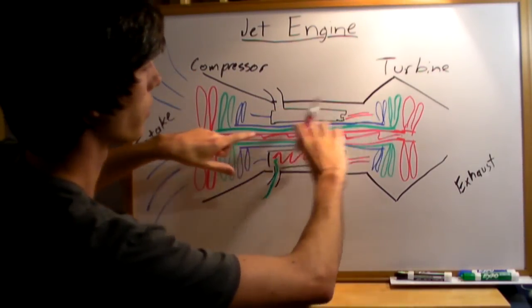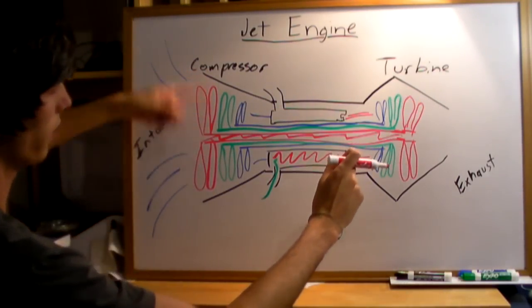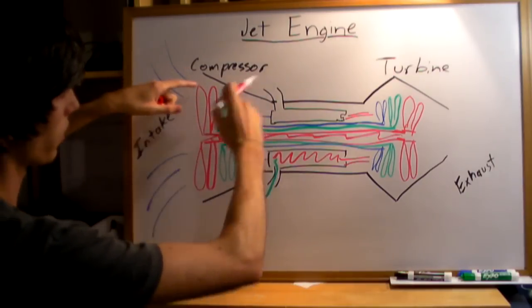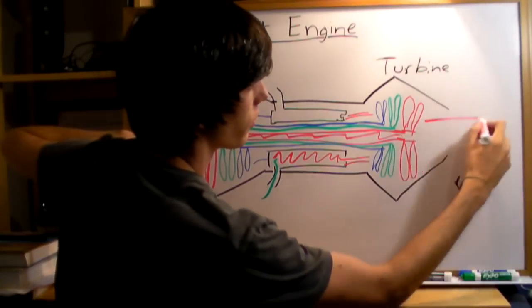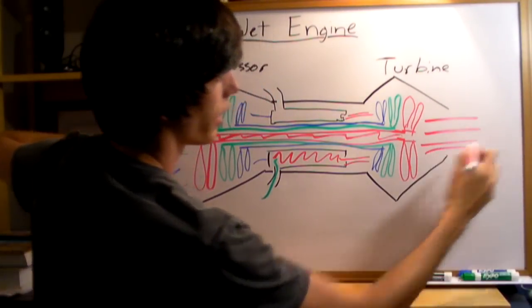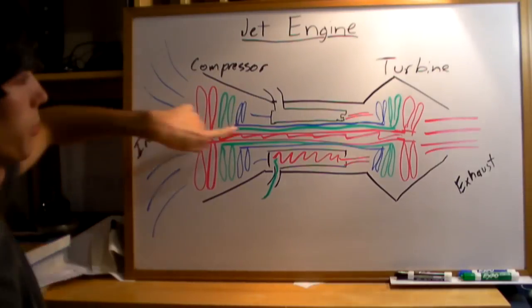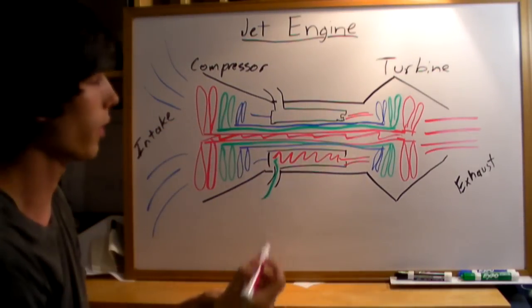Now the turbine, some of that air will go into rotating these compressor fans over here and sucking in air. The rest of it will be forced out the back at a very high rate, much quicker than the air is being pulled in, and so it will provide a forward thrust.